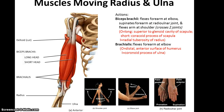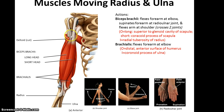Now for muscles that move the radius and the ulna. We have the biceps brachii, which can flex the forearm at the elbow, can help supinate the forearm at the radial ulnar joint, and also flexes the arm at the shoulder. Because one of its heads allows it to cross two joints — both the shoulder joint and the elbow joint. The origin of its long head is the superior portion of the glenoid cavity of the scapula, while its short head originates at the coracoid process of the scapula. Its insertion is the radial tuberosity of the radius.